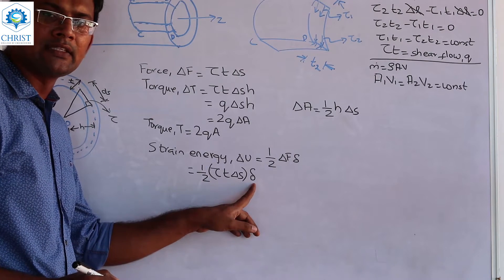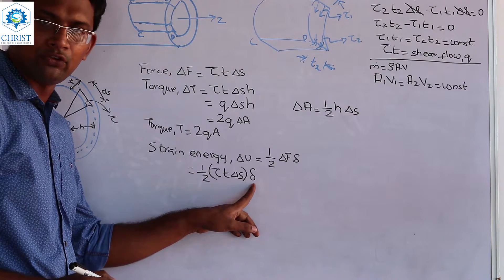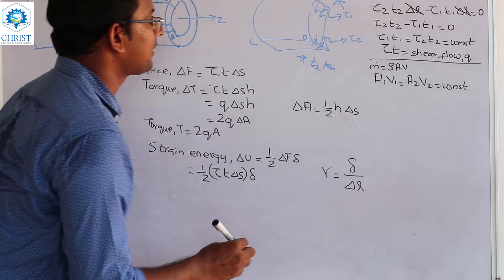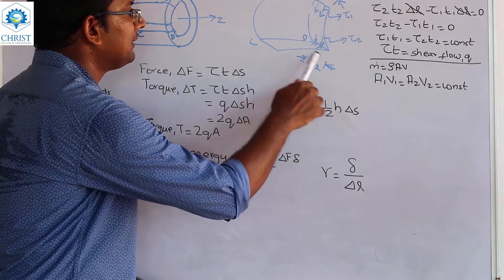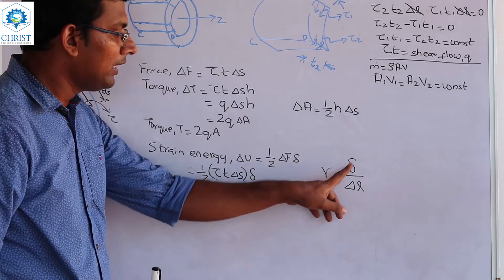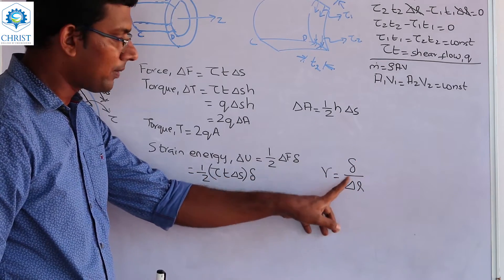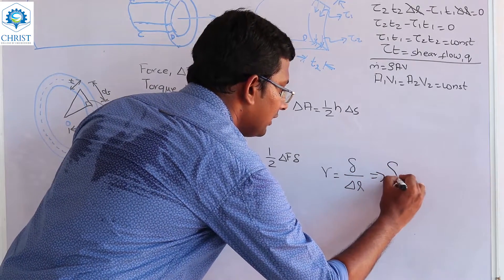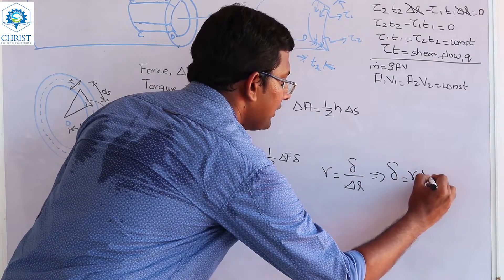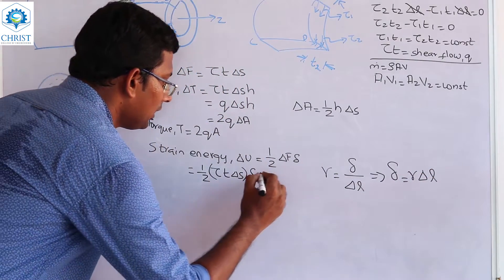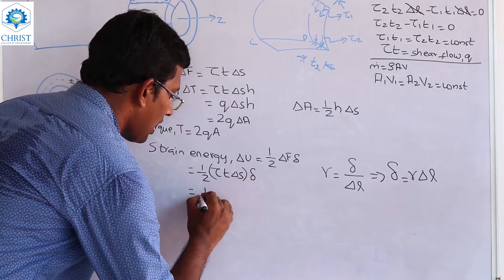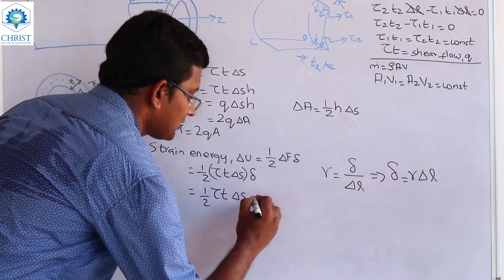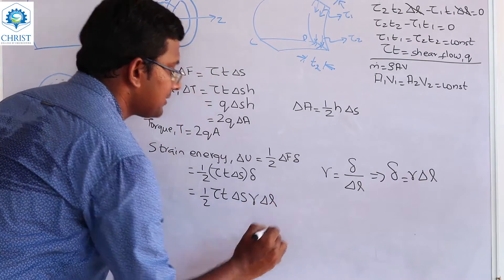The deformation delta is equal to gamma into delta L. Strain is equal to change in length by original length. So delta equals gamma into delta L. This gives us the strain energy expression: delta U equals half into tau into delta S into gamma into delta L.